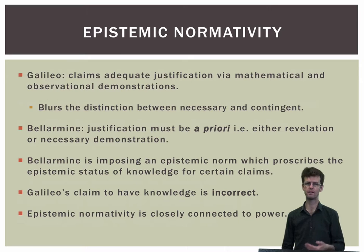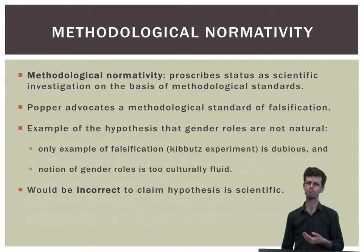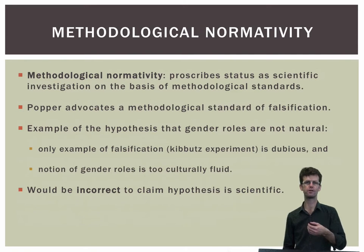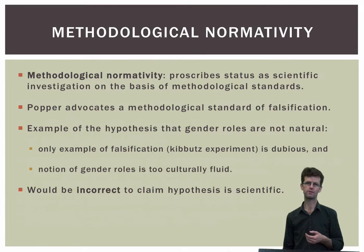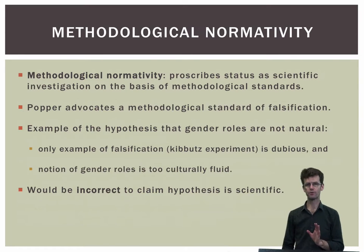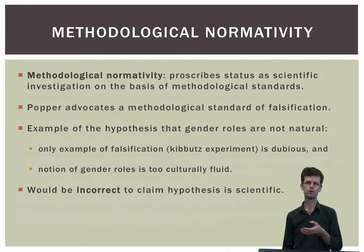Note that Bellarmine was in a position to do this because the Church had previously claimed power over others as an epistemic authority. Epistemic normativity and these kinds of power relations are often closely connected. Methodological normativity prescribes the categorisation of certain investigations as scientific on the grounds that they do not fulfil certain methodological standards. The most obvious example in thinking about science is the use by Popper of falsification as a demarcation criterion for what counts as being part of science and what does not.